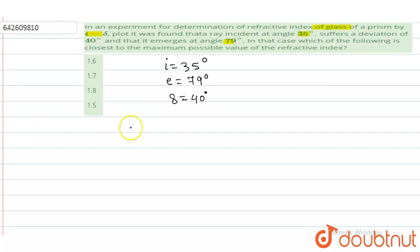You know the formula of deviation. Deviation is I plus E minus A.